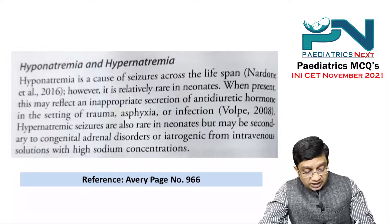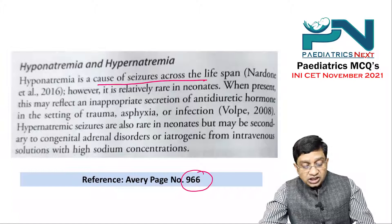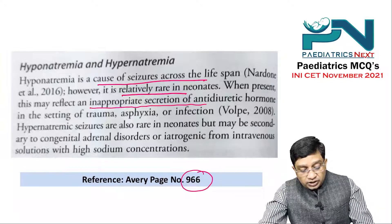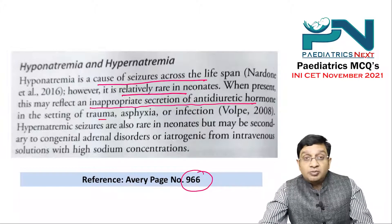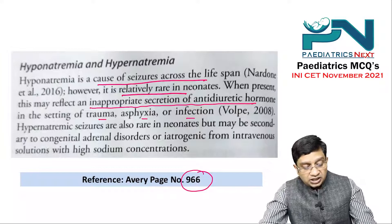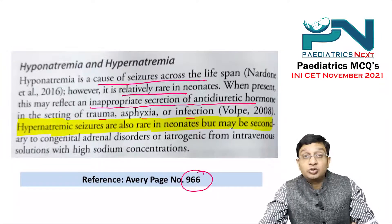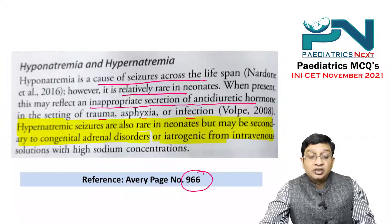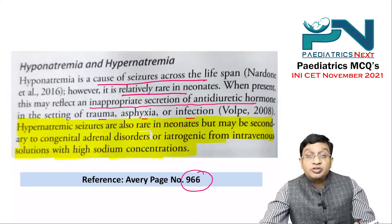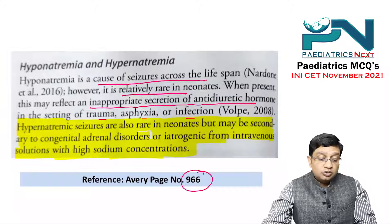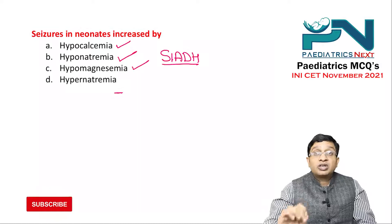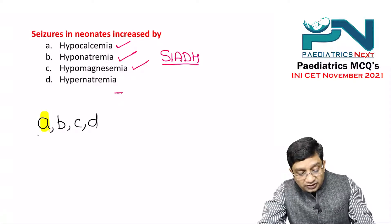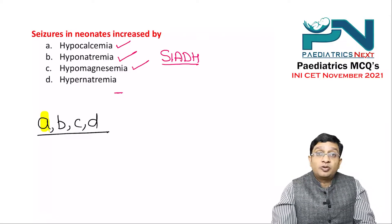Going to page 966 of the same textbook, it says hyponatremia is a cause of seizure across the lifespan, although it is relatively rare in neonates. If hyponatremia is present, it is usually due to inappropriate secretion of anti-diuretic hormone, seen in the setting of trauma, asphyxia, or infection. Hypernatremic seizures are also rare in neonates but can be secondary to congenital adrenal disorders or from intravenous solution with high sodium concentration. So all four options — A, B, C, D — are correct.